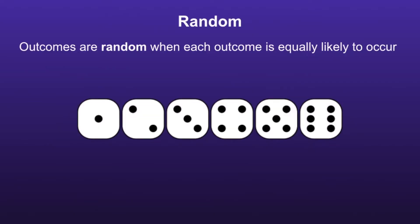Random: outcomes are random when each outcome is equally likely to occur. So if I was to roll a number cube, there is an equal chance of rolling a 1, 2, 3, 4, 5, or 6. So the outcomes would be random.